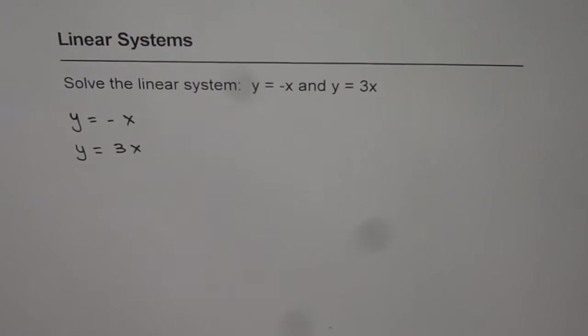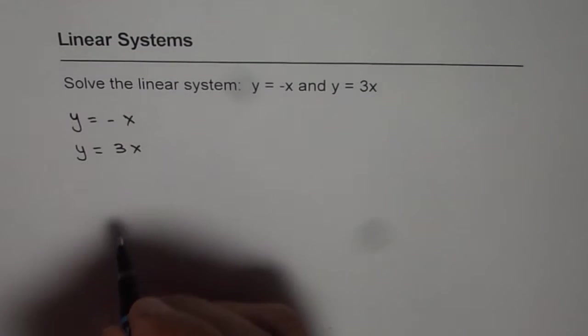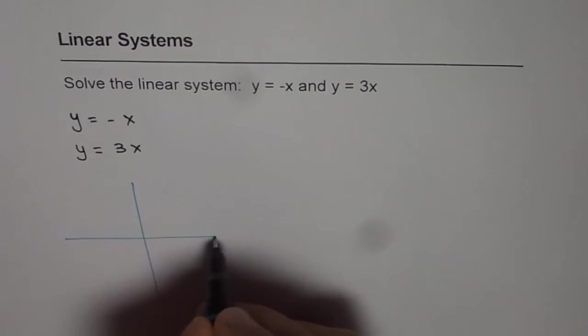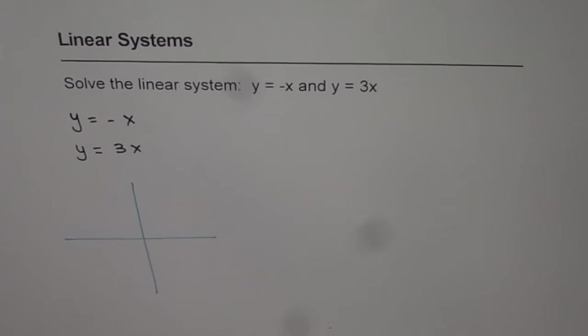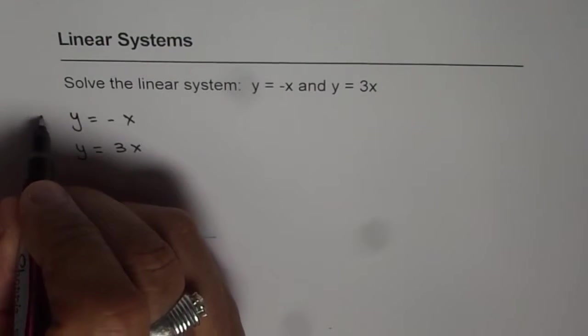Both these lines actually will pass through origin. So if you graph it, then y equals minus x, let me call this as line 1.